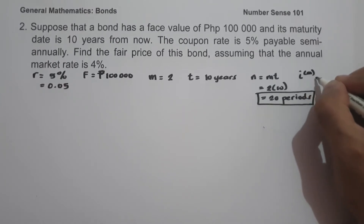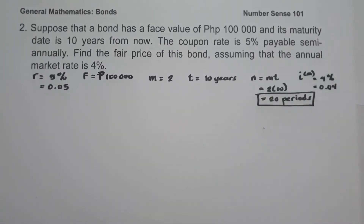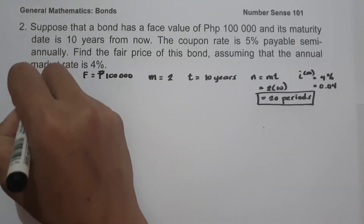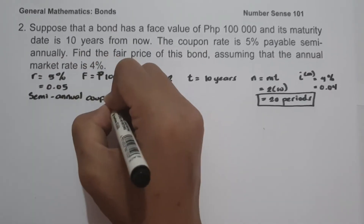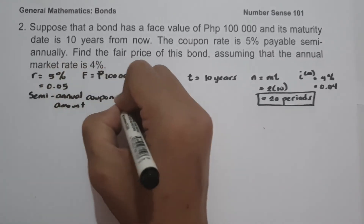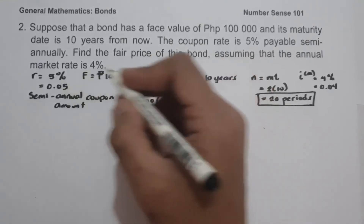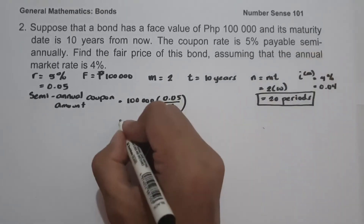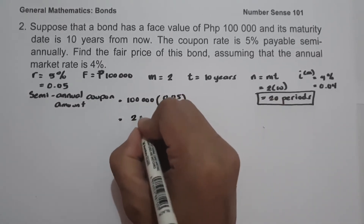The annual market rate is 4% or 0.04 in decimal. Next, we compute the semi-annual coupon amount: 100,000 multiplied by the coupon rate 0.05 divided by 2 (because semi-annually) = 100,000 × 0.025 = 2,500 pesos.